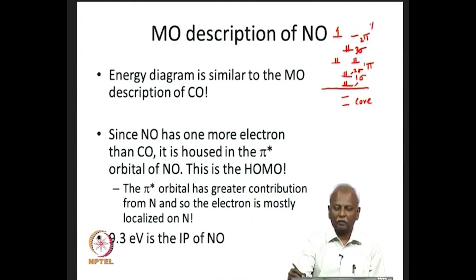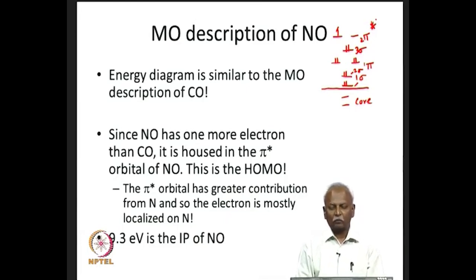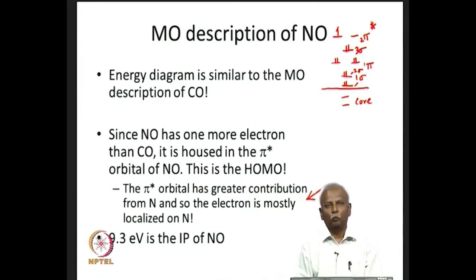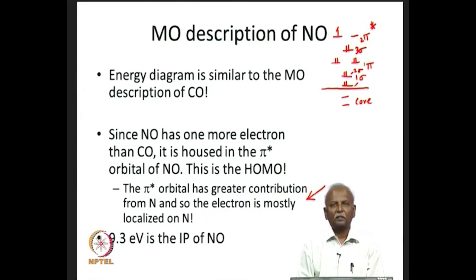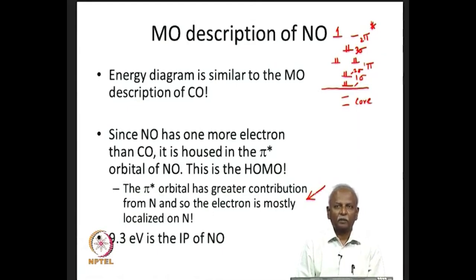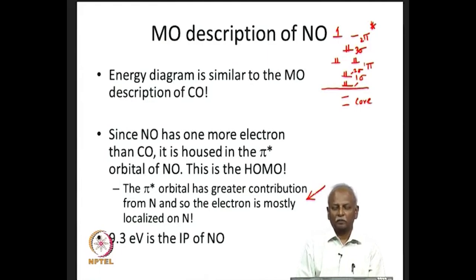This two pi orbital has anti-bonding character, indicated with a star. The π* orbital has one electron on nitric oxide. Since the π* orbital has greater contribution from nitrogen, the electron is mostly localized on the nitrogen side of NO. This can be confirmed from EPR spectroscopy of nitric oxide, which tells us that nitrogen has most of the unpaired electron density. After ionization, the type of spectrum obtained also confirms the electron is localized on a π* orbital mostly on nitrogen.